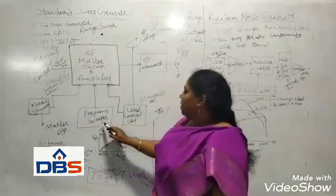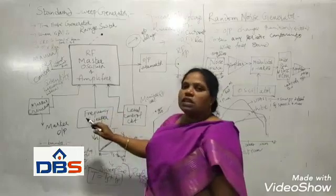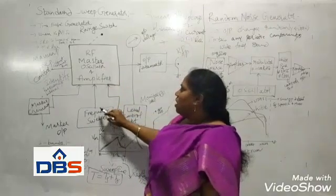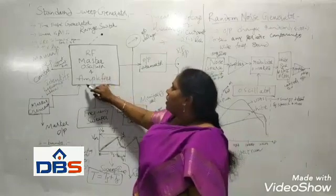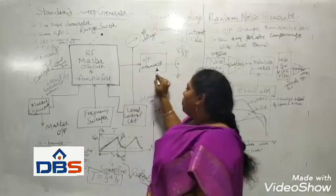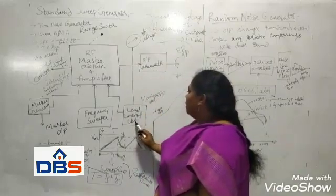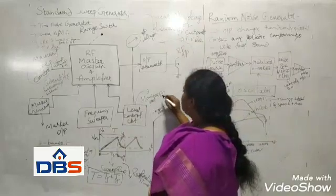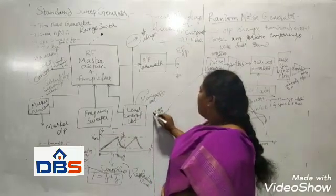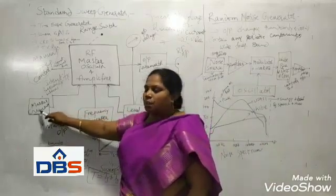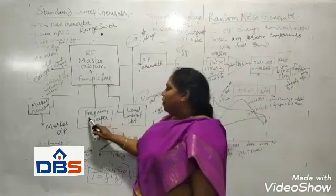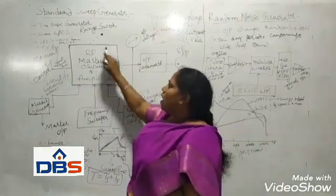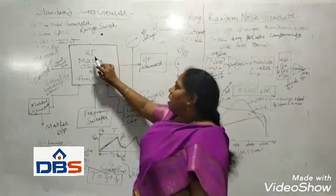Next, the frequency sweeper — it is connected to the RF master oscillator to take the sweep frequency, and it adjusts the frequencies. It produces the output attenuator. Also, here we have the level control circuit, which monitors the RF level. The marker generator output, the level control circuit output, and the variable frequency all mix in the RF master oscillator, where the total output is developed.